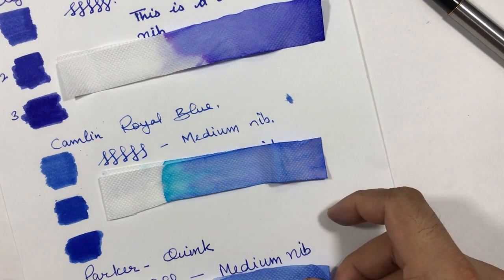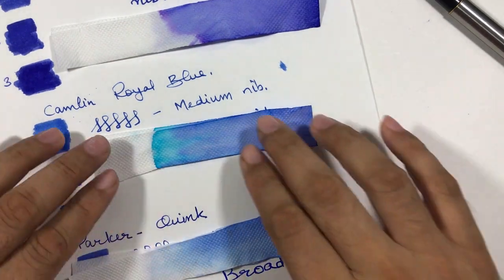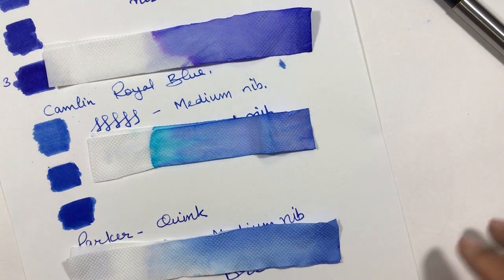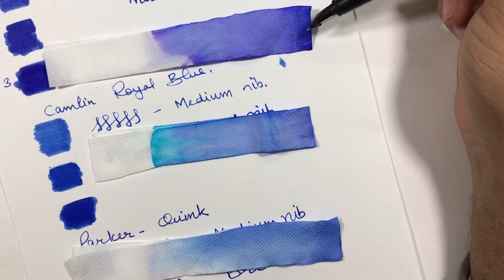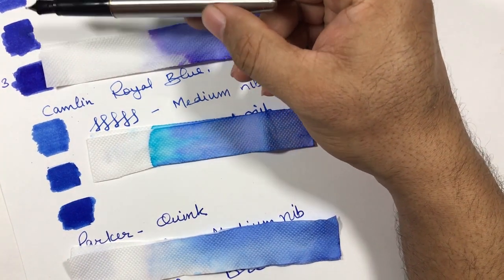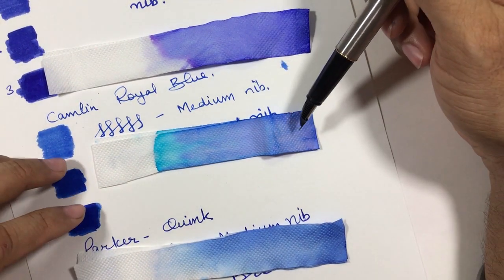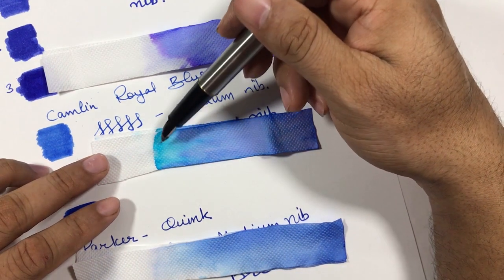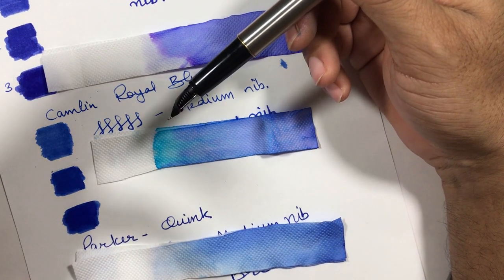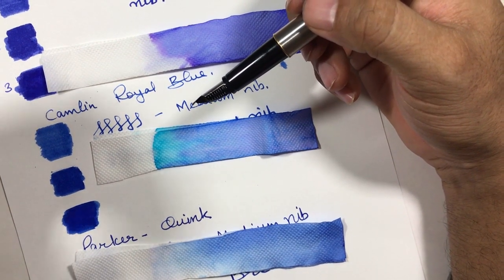You can see all three chromatographs here in the single frame. Now you can see the Daytone ink goes from blue towards violet, it has some purple touch to it, so that's why this ink is more towards indigo type. This Camlin goes from blue towards more of a turquoise, it has a turquoise touch, so that's why this Camlin ink is a little sky bluish type, but still it is quite less saturated.